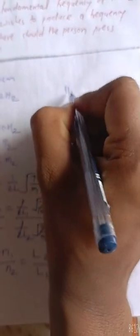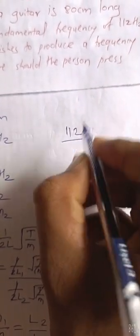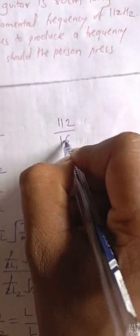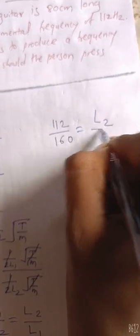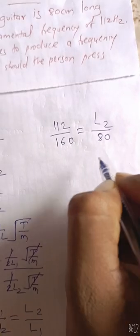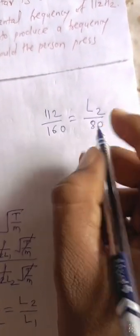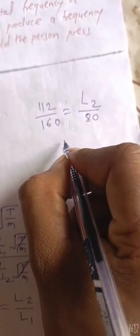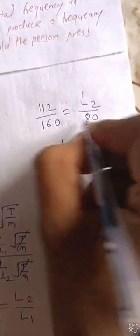Therefore L2 is equal to n1 divided by n2 into L1. Substituting values: L2 is equal to 112 divided by 160 into 80.